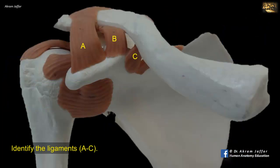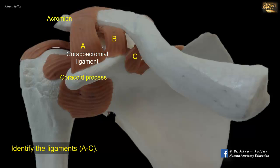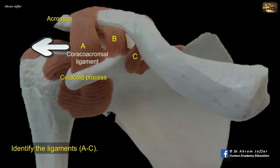Identify the ligaments A to C. A is the coracoacromial ligament. It is considered as an extrinsic ligament of the glenohumeral joint. This strong ligament links the coracoid process and acromion process together. The three structures — the coracoid, coracoacromial ligament, and the acromion — form the coracoacromial arch. This arch prevents the superior displacement of the shoulder joint. The tendon of supraspinatus muscle passes beneath the ligament, separated from it by a bursa.